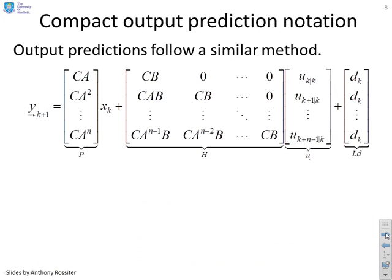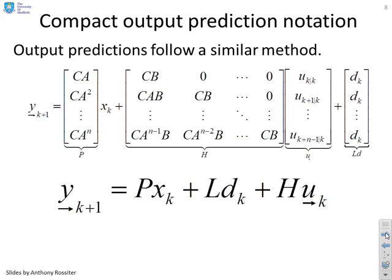I can do a similar thing clearly for the output predictions. It's a very similar expression. The only subtle difference here, you've got the bit that depends on the past, now includes this disturbance term, which you'll remember is there to cater for not only disturbances, but also parameter uncertainty. And I've got a bit which depends on the future inputs.